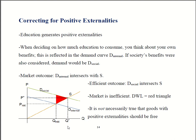So here the market is inefficient. That creates deadweight loss. Think about this area over here between Q market and Q star. The supply curve is telling us the marginal cost of providing that extra education — that's down here. Society's benefits from that education is up on D social — that's over here. Society's benefits, including your own benefits, that is.